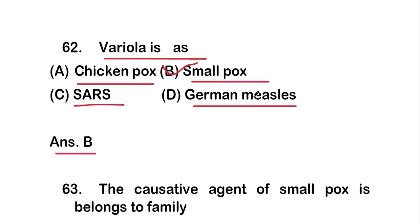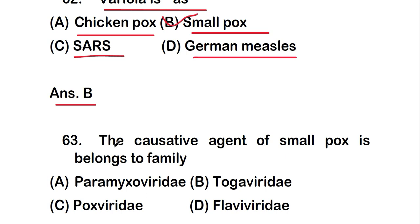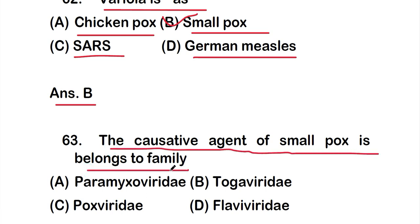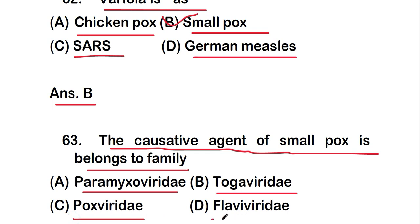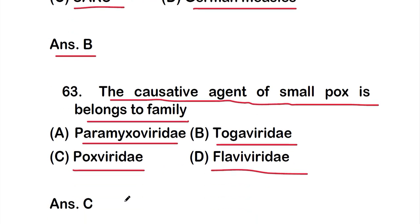Question number 63: The causative agent of smallpox belongs to family — option A: Paramyxoviridae, option B: Togaviridae, option C: Poxviridae, or option D: Flaviviridae. The correct answer is option C, Poxviridae. The causative agent of smallpox belongs to the family Poxviridae.